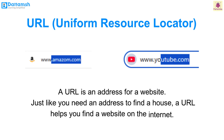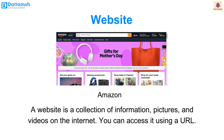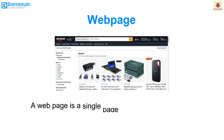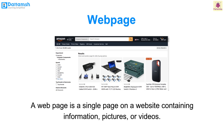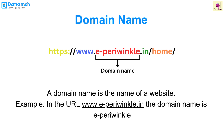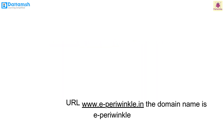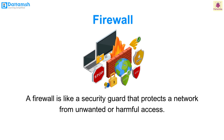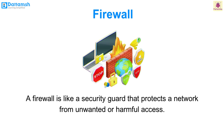A URL, or Uniform Resource Locator, is an address for a website — just like you need an address to find a house, a URL helps you find a website on the internet. A website is a collection of information, pictures and videos on the internet, accessible using a URL. A web page is a single page on a website. A domain name is the name of a website — for example, in the URL www.e-periwinkle.in, the domain name is e-periwinkle. A firewall is like a security guard that protects a network from unwanted and harmful access.